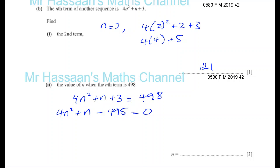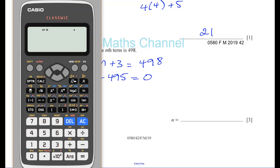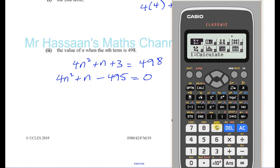Bring everything to one side: 4n squared plus n minus 495 equals 0. This is the very last question on the paper, so you have to try to factorize this — and since n is going to be a whole number, it is factorizable. If you get stuck, you could use the quadratic formula. You've got to find two numbers that multiply to give 4 times minus 495 and add to give 1, which might be difficult to think of in your head.